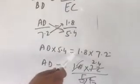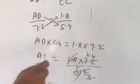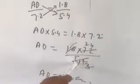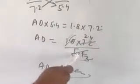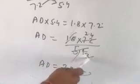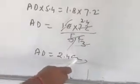AD into 5.4 equal to 1.8 into 7.2. AD equal to 1.8 into 7.2 upon 5.4. Removing decimal points, 18, 72, 54. Dividing 72 by 3 equals 2.4. Then AD equal to 2.4 centimeter.